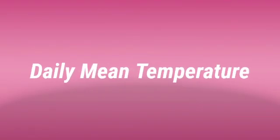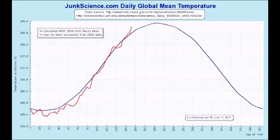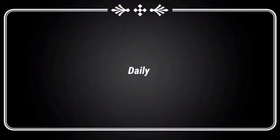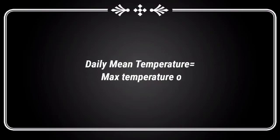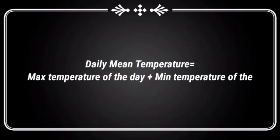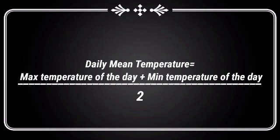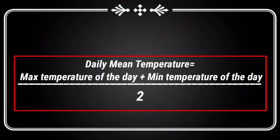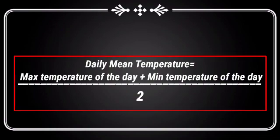Daily mean temperature. Daily mean temperature is equal to maximum temperature of the day plus minimum temperature of the day, divided by 2.